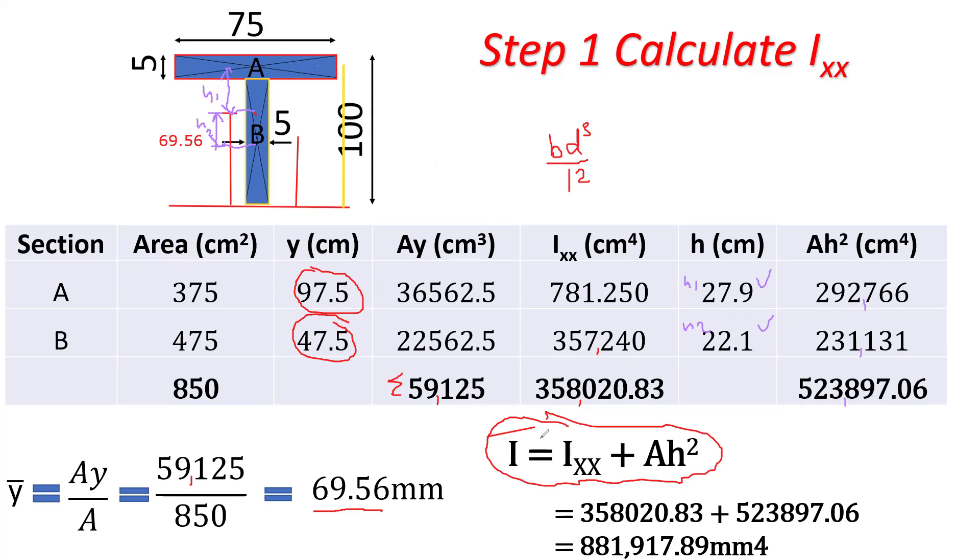So now to get I, you basically add these two components. You basically add Ixx and Ah squared, and you get the value 881,917.89 millimeters to the fourth. So that is our Ixx.